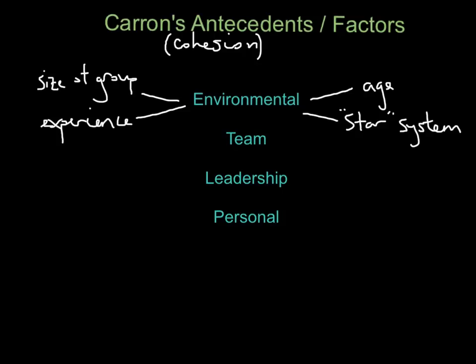Within the environmental factor, various things can affect cohesion. The size of the group matters — in a big group you're more likely to find someone you like, but also someone you dislike; in a small group, disliking someone is a bigger problem. Experience levels within the group can affect cohesion — are there novices mixing with experienced players? Age is linked to this, as different ages have different mentalities. Also, avoid a star system — as a leader or coach, you don't want obvious favourites within the group, because that leads to other people feeling left out.